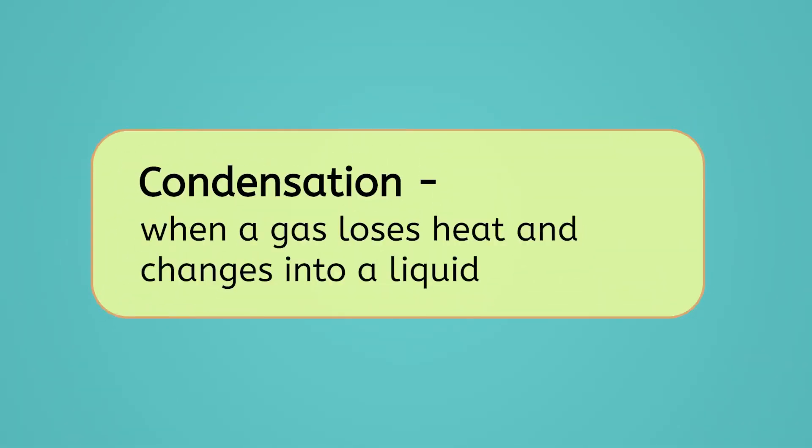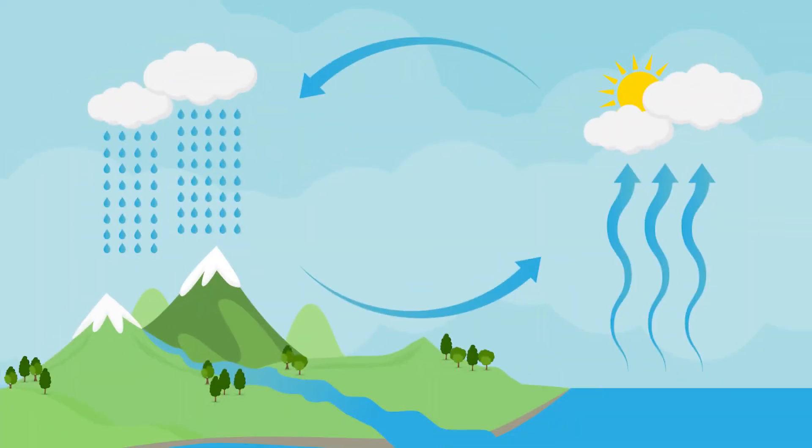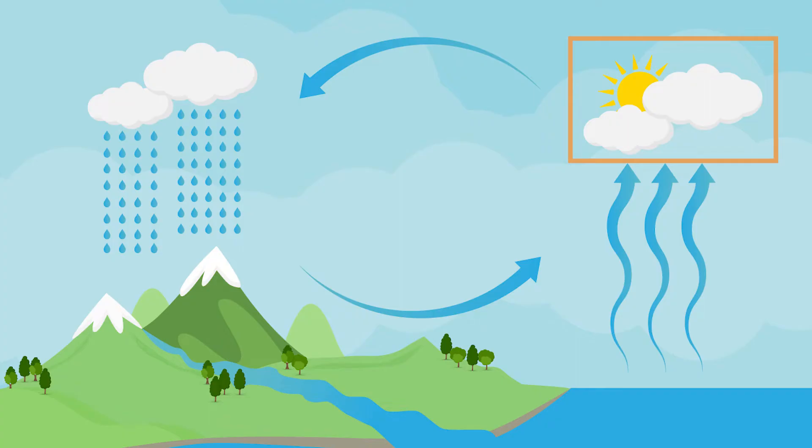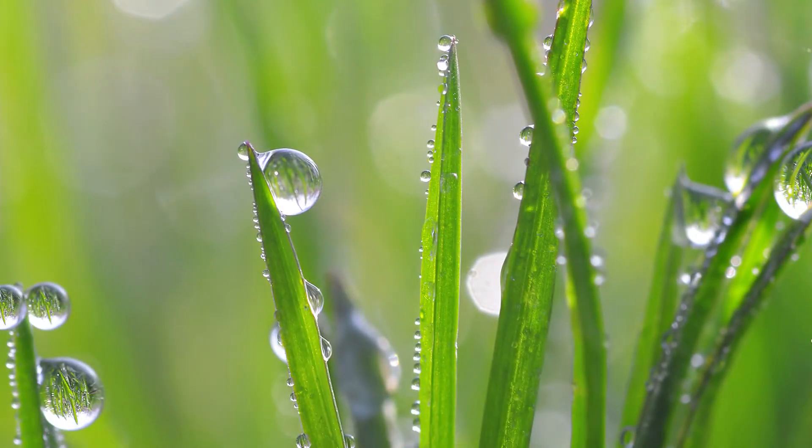When a gas loses heat and changes into a liquid, it's called condensation. During the water cycle, water vapor condenses into clouds in the sky. Condensation is also the reason for water droplets on the outside of a cold drink or dew on the grass in the morning.